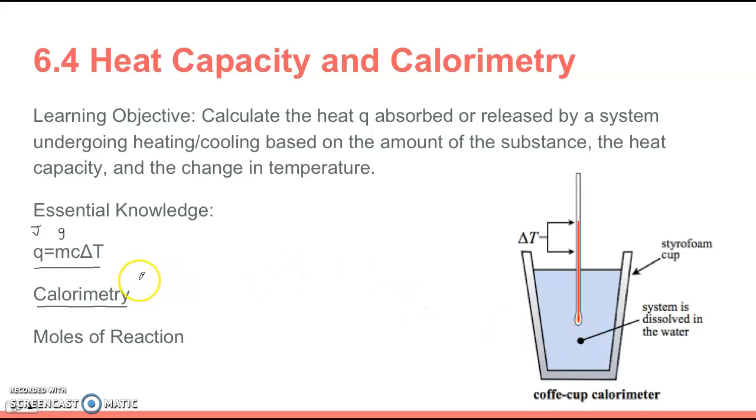When you do calorimetry to measure heat flow, if the temperature of the calorimeter goes up, that means the system was giving off heat energy. So that means it's going to be an exothermic process.